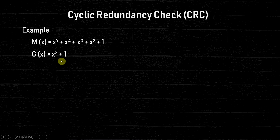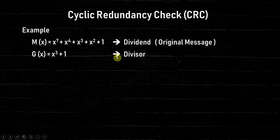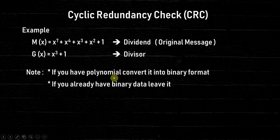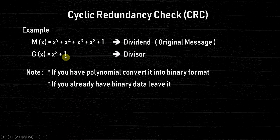Let's take an example. I have M(x) and G(x) — M(x) is our dividend (the original message we're sending over the network) and G(x) is our divisor. Since we perform binary division, we need to work with these values. One thing to know: if you have a polynomial value, you need to convert it into binary or bit format. If you already have zeros and ones, just leave it. Here both values are in polynomial form, so we need to convert them.